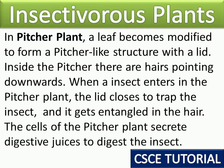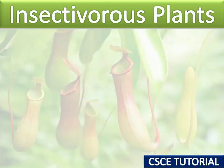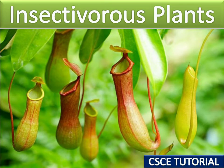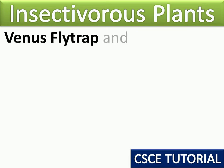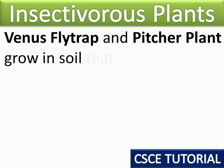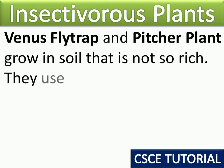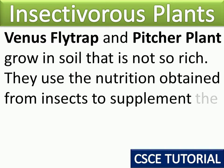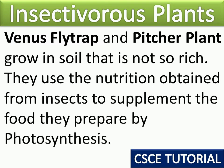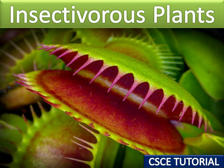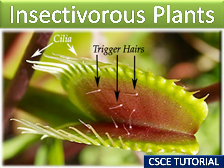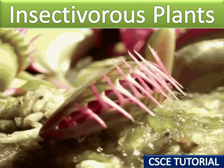The pitcher plant's leaves are modified into a pitcher-like structure with a lid on top. The hairs inside are downward-pointing, so when an insect enters it gets entangled and the pitcher plant secretes digestive juices to digest it. Venus flytrap and pitcher plant grow in soil that is not very nutrient-rich. They use the nutrition obtained from insects to supplement the food they prepare by photosynthesis. The Venus flytrap has trigger hairs, and as soon as an insect lands on it, it closes, with cilia around the edges.